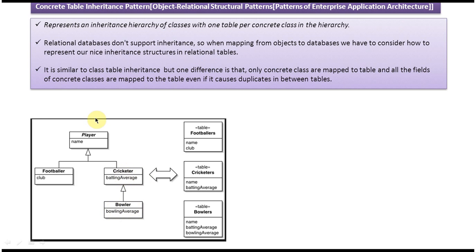Bowler inherits from Cricketer and has a bowling average attribute. So in this inheritance hierarchy: Footballer is a subclass of Player and has name plus club. Cricketer is a subclass of Player and has name and batting average. Bowler is a subclass of Cricketer and has name, batting average, and bowling average.